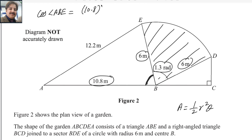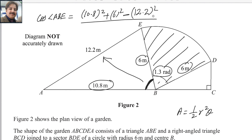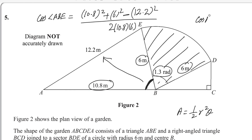...10.8 squared plus 6 squared — these are the two adjacent sides containing this angle — minus the square of the opposite side, 12.2 squared, divided by two times the adjacent sides: 2 times 10.8 times 6. This is the law of cosines formula: cosine(A) = (b² + c² − a²) / (2bc), where a is the opposite side and b, c are the adjacent sides.